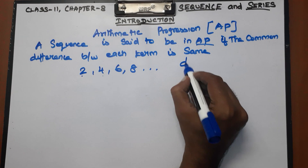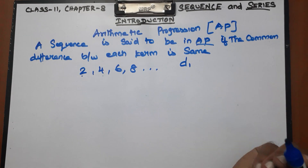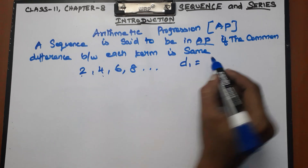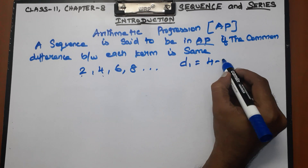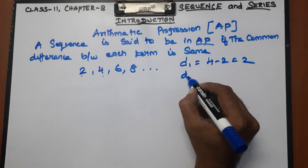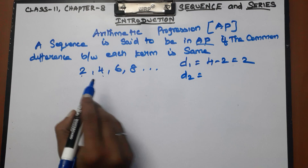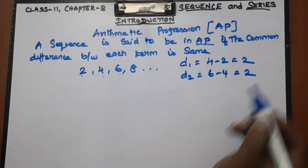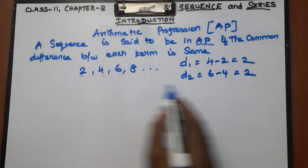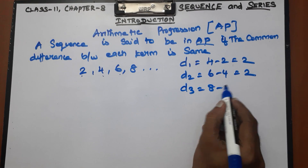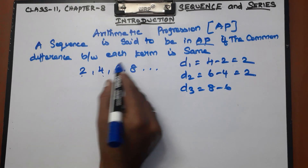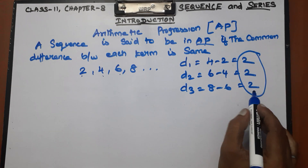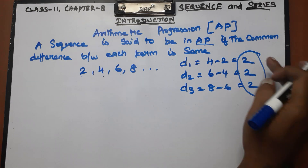For an Arithmetic Progression, the common difference d1 = second term minus first term = 4 − 2 = 2. d2 = third term minus second term = 6 − 4 = 2. d3 = 8 − 6 = 2. So the common difference is 2.